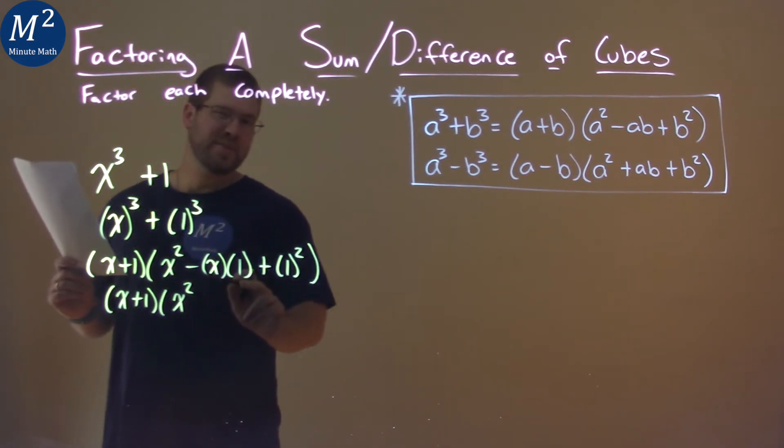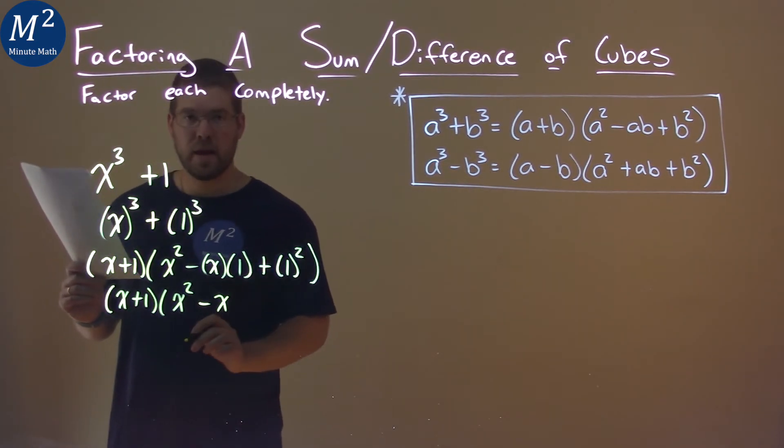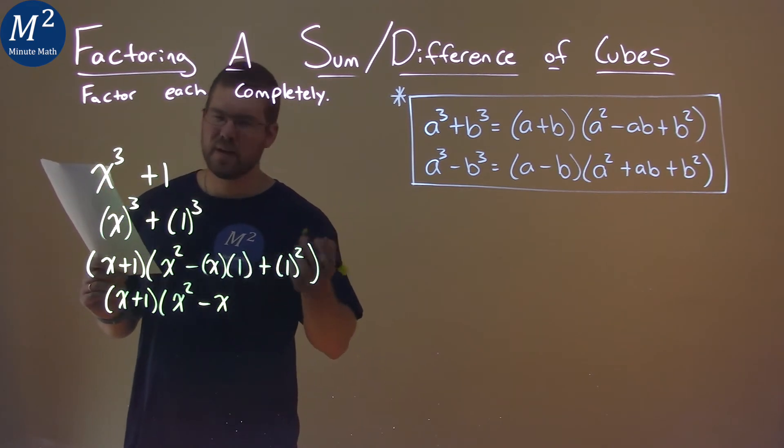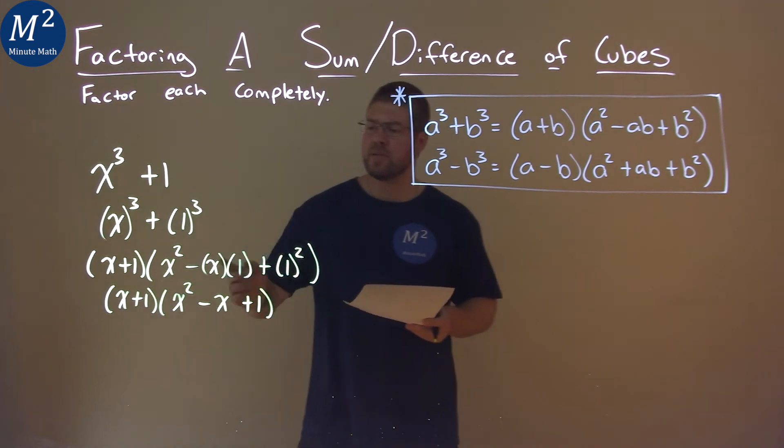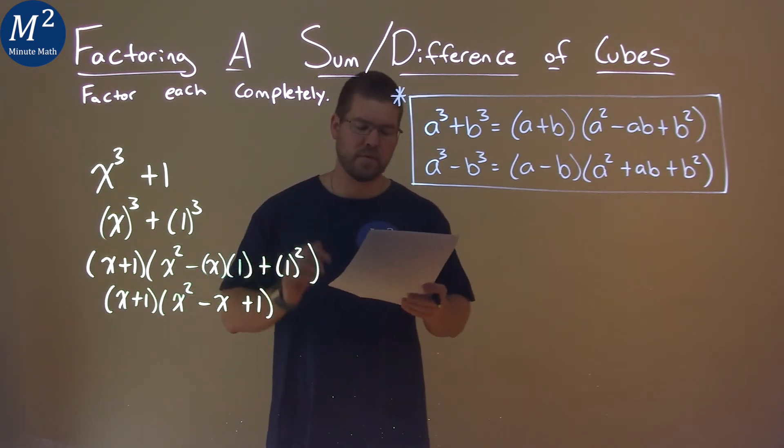x times one, we just write that as an x. So we subtract an x here and then one squared again is just one. Pretty simple. And so our final answer is x plus one times x squared minus x plus one.